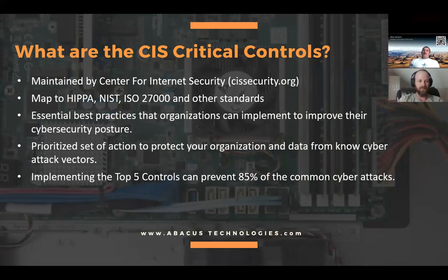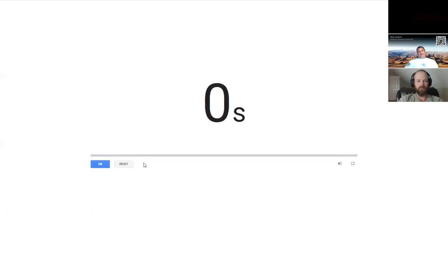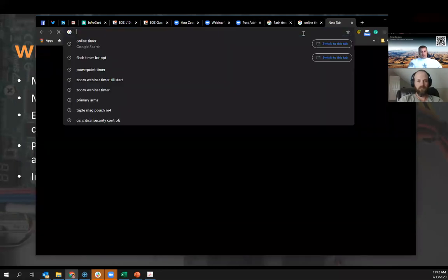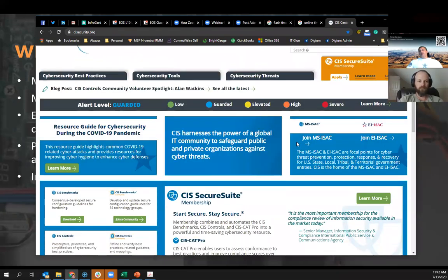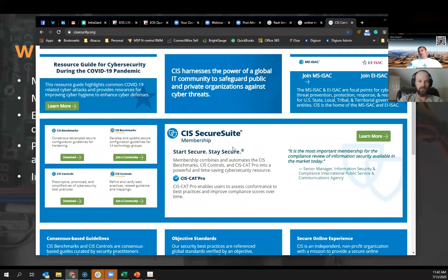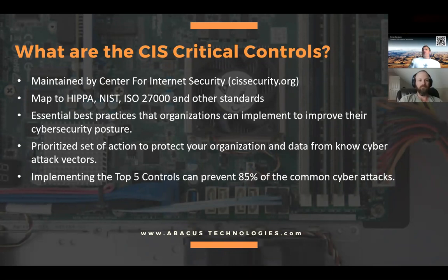Let's talk about the CIS Critical Controls. For those who may not know what they are — they were created and maintained by the Center for Internet Security, a non-profit body that sets standards and helps people become more secure. Their website has great resources related to security. They've got benchmarks, they've got the controls of course, and I highly recommend you go out there and take a look at that site. There are only 20 controls total, which is one advantage — when you start looking at NIST, ISO, or even HIPAA, those standards are very deep, very broad, and a bit overwhelming for a lot of small businesses when it comes to implementing good cybersecurity practice.